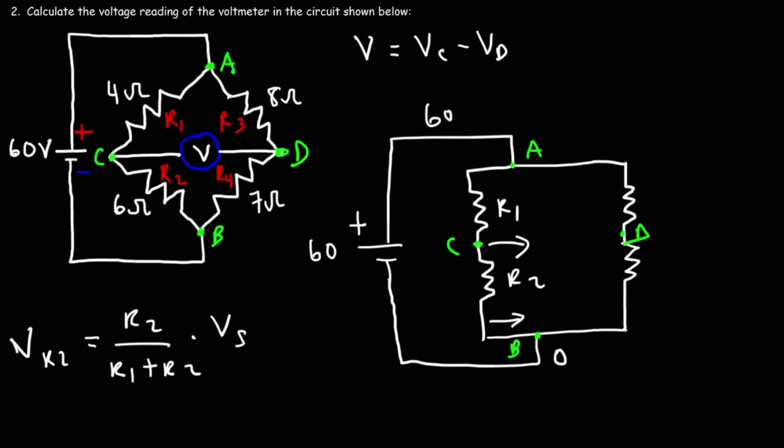By the way, one thing that we should have done at the beginning is determine if this particular Wheatstone bridge circuit is balanced or unbalanced. What would you say? Would you say it's balanced or unbalanced? Comparing R1 and R3, R3 is twice the value of R1. Now, if we multiply R2 by 2, we're not going to get 7. We're going to get 12. So the ratio between R1 and R2 is not the same as the ratio between R3 and R4. 6 divided by 4 is not the same as 7 divided by 8. We could also divide it the other way as well, but the ratio is not the same.